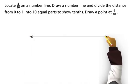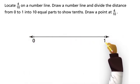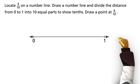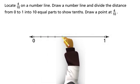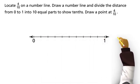Locate 4 tenths on a number line. Draw a number line and divide the distance from 0 to 1 into 10 equal parts to show tenths. Draw a point at 4 tenths.